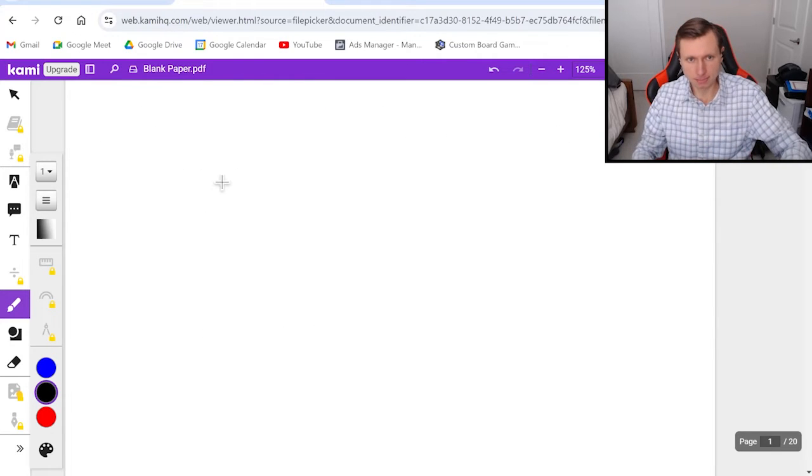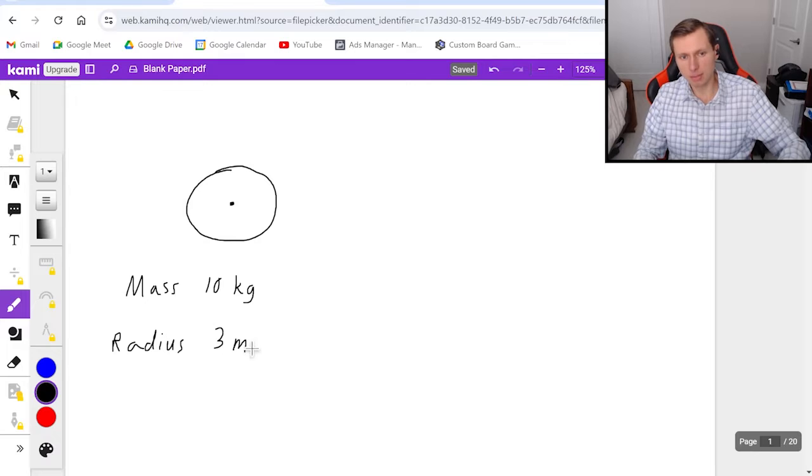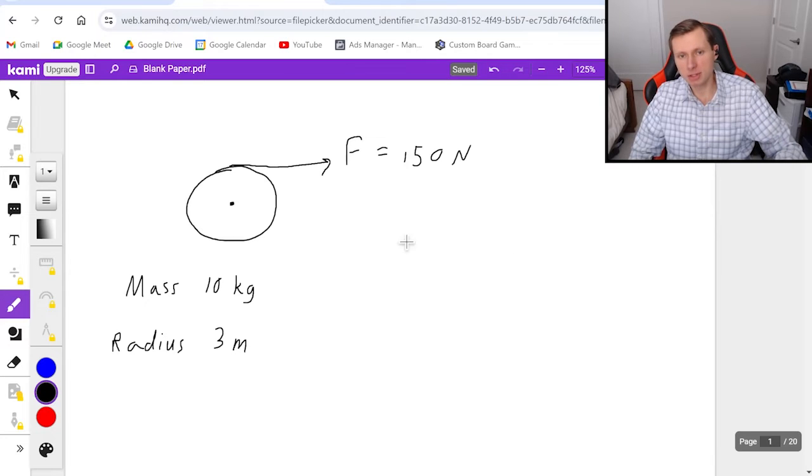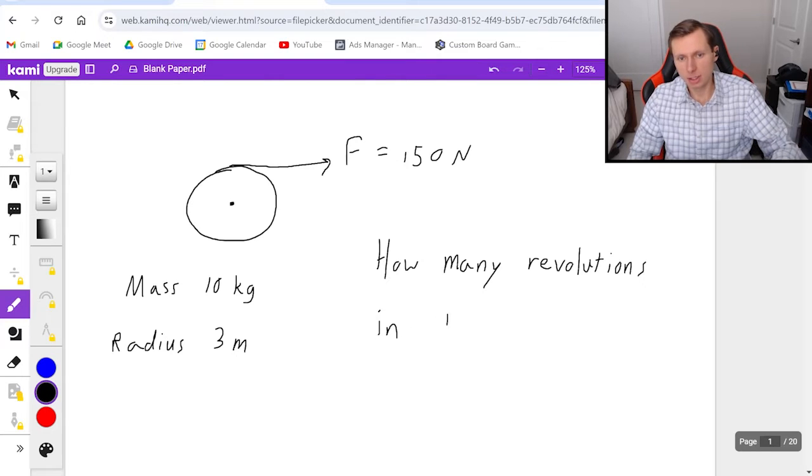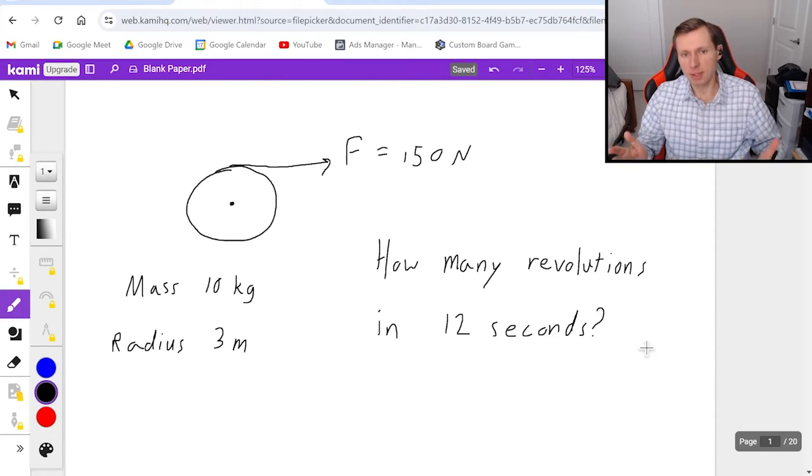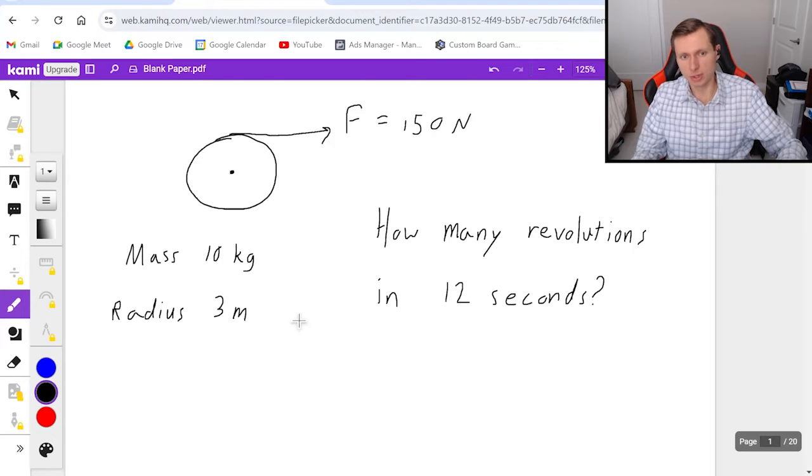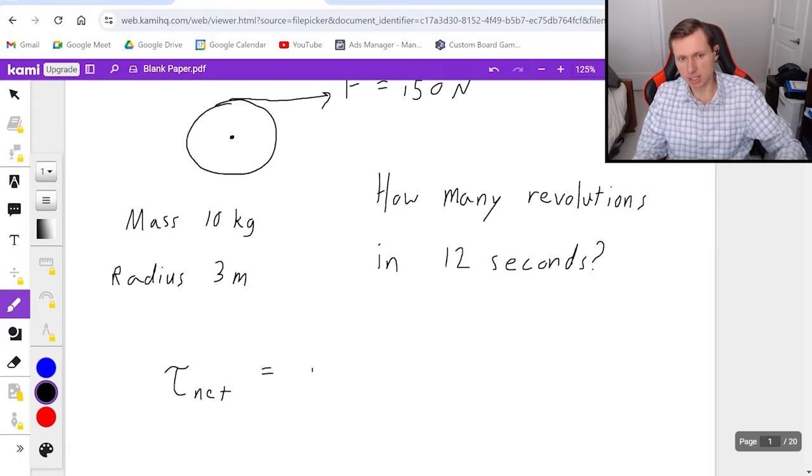Let's look at this first problem. I have a wheel, and the wheel has a mass of 10 kilograms with a radius of 3 meters. And I'm going to be pulling on this wheel perfectly perpendicular to the center with a force of 150 newtons. And my question is going to be, how many revolutions do we complete in 12 seconds? Let's go ahead and get started. We are going to use Newton's second law for torque, because we got to find that angular acceleration. So what that means is net torque equals I times alpha.